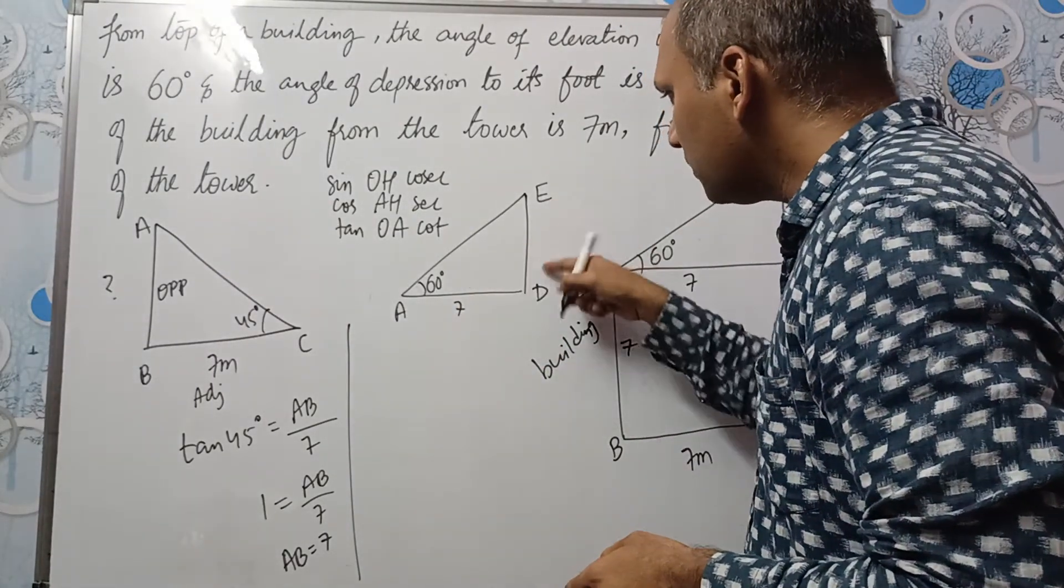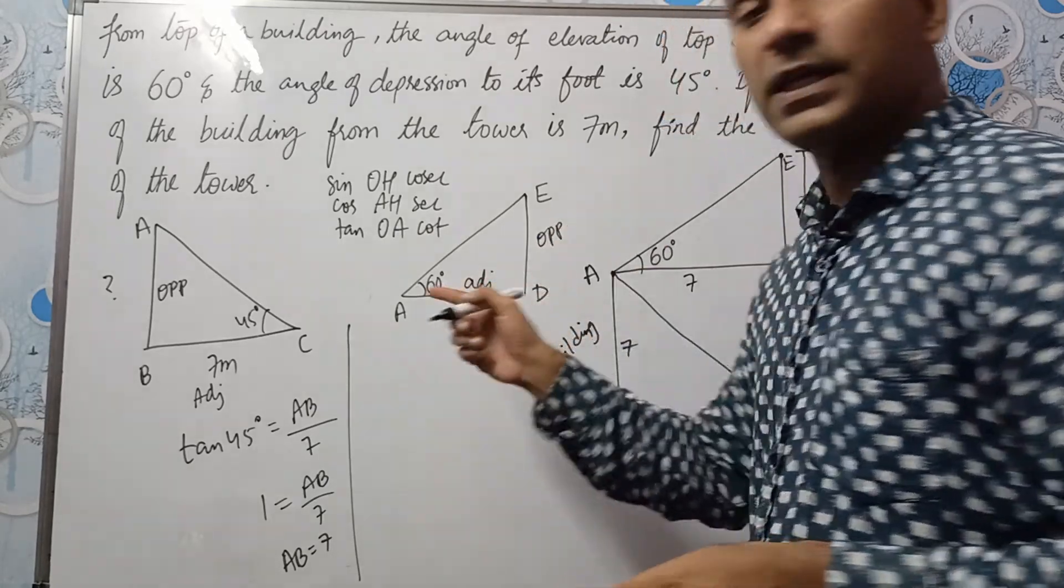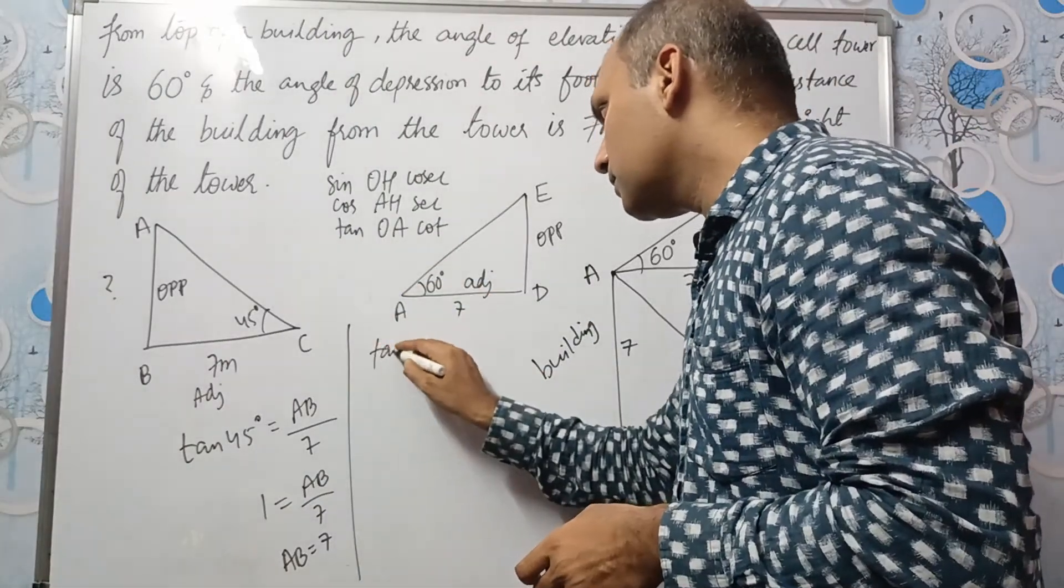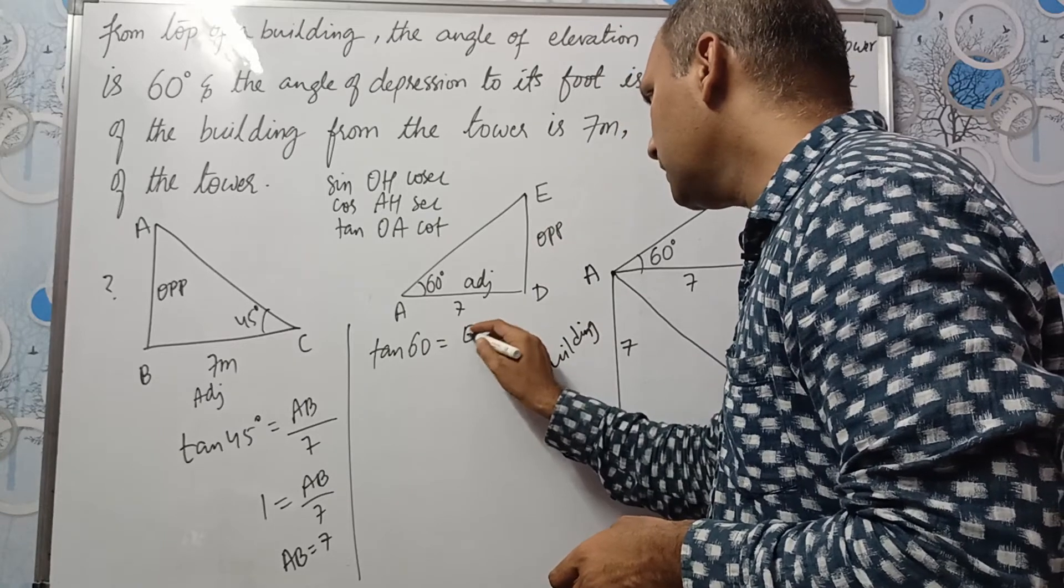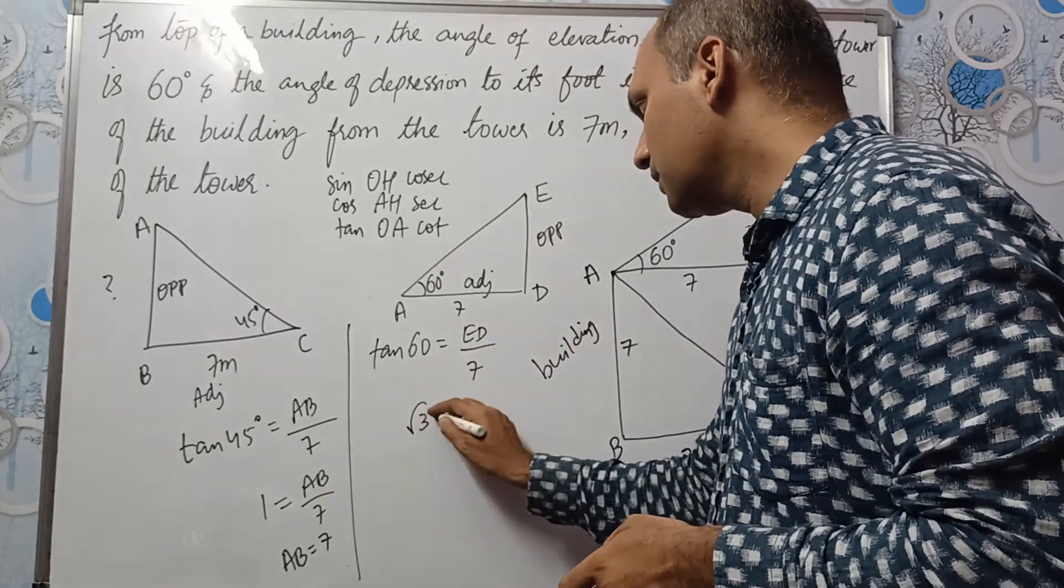60 is here. We need to find ED. That means we need to find opposite and we know adjacent. Again opposite and adjacent are in picture. So we can take tan value. Tan 60 is equal to opposite is ED divided by adjacent is 7. Tan 60 is root 3.